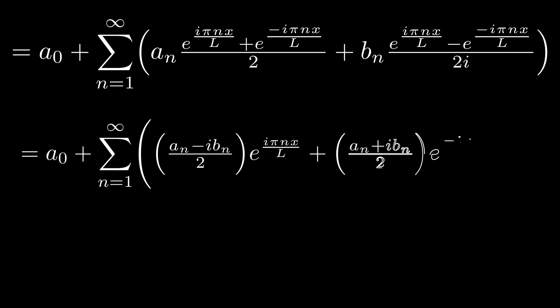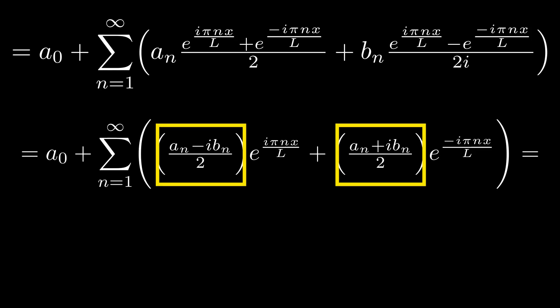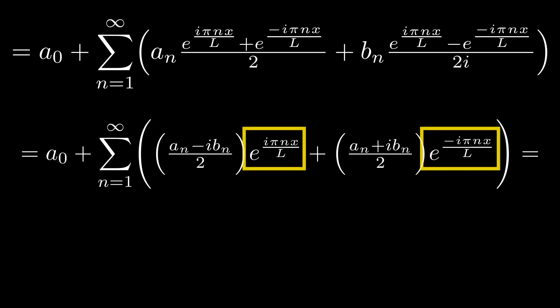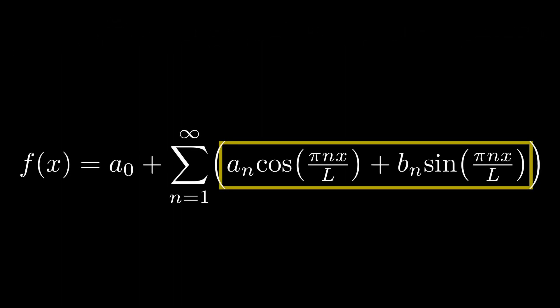Grouping like terms together, we end up with this expression. What you might notice is that these two terms are complex conjugates of each other, and these two terms are also complex conjugates of each other. The result is that the sum of these two values is completely real, even though it looks like it could be complex. This is reassuring because it means we didn't mess up our arithmetic. The functions we started with were completely real, so our result should remain so.